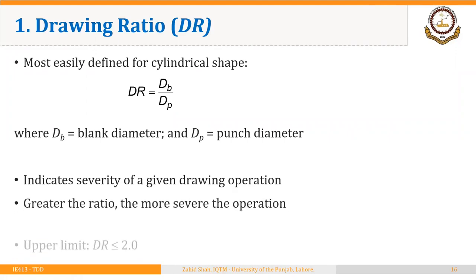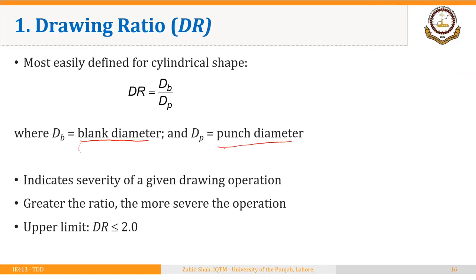First, drawing ratio. It is most easily defined for a cylindrical shape and is the ratio of the blank diameter to the punch diameter. It indicates the severity of a given drawing operation — the greater the ratio, the more severe the operation. The upper limit for drawing ratio is 2, so the drawing ratio should be less than or equal to 2. If it is greater than 2, then we may require more than one drawing operation, or we may require heating the blank between different drawing operations.